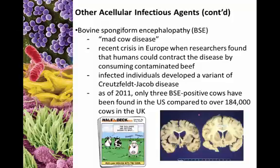Infected individuals developed a variant of Creutzfeldt-Jakob disease. To give you an idea of how widespread the European crisis was: as of 2011, the United States had only seen three BSE-positive cows, compared to over 184,000 BSE-infected cows in the United Kingdom. England and Europe were dealing with this much more than the US was.